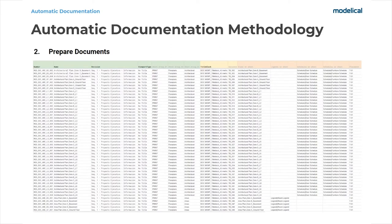The second step is to prepare the documentation we want to generate. For this, we have a spreadsheet template linked to the information we have read previously. It has specific tabs for views and sheets that we want to create. So we write in the cells all the views and sheets with all their parameters we are going to create. With this way, we can take advantage of all the potential of preparing documentation in spreadsheets, with all the functionalities like copying and dragging.